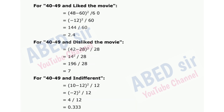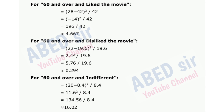For 40 to 49 and liked the movie: 2.4. For 40 to 49 and disliked the movie: 7. For 40 to 49 and indifferent: 0.333. For 60 and over and liked the movie: 4.667. For 60 and over and disliked the movie: 0.294. For 60 and over and indifferent: 16.02.